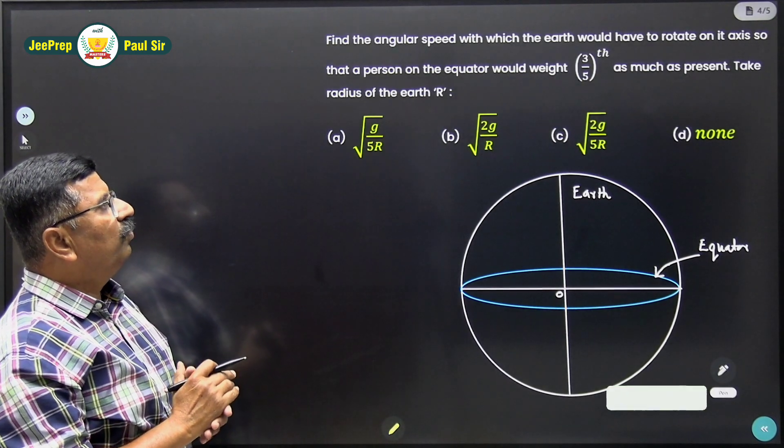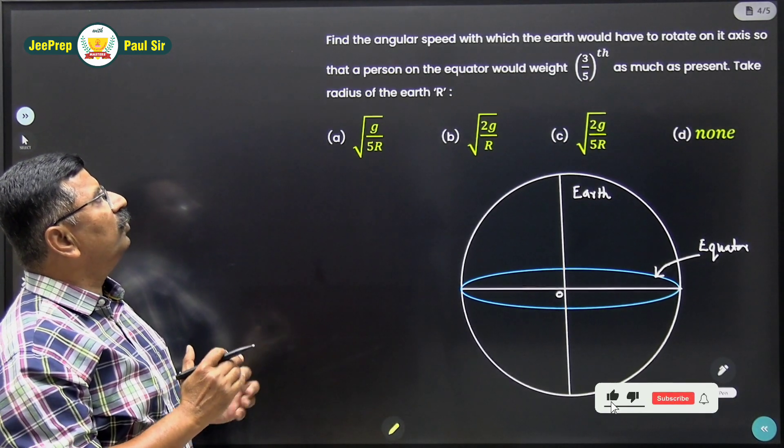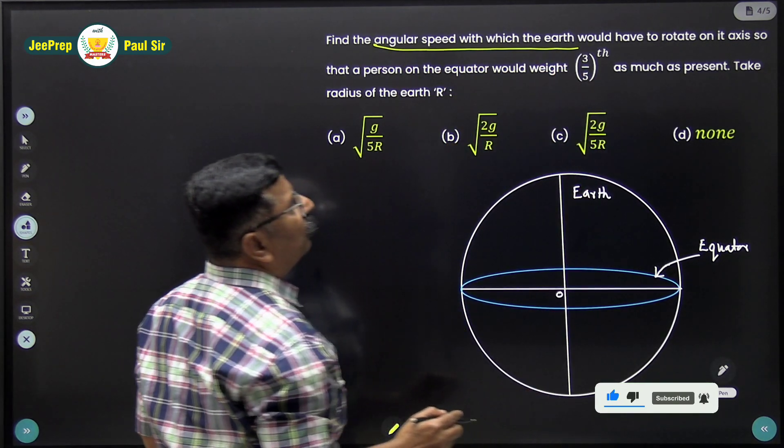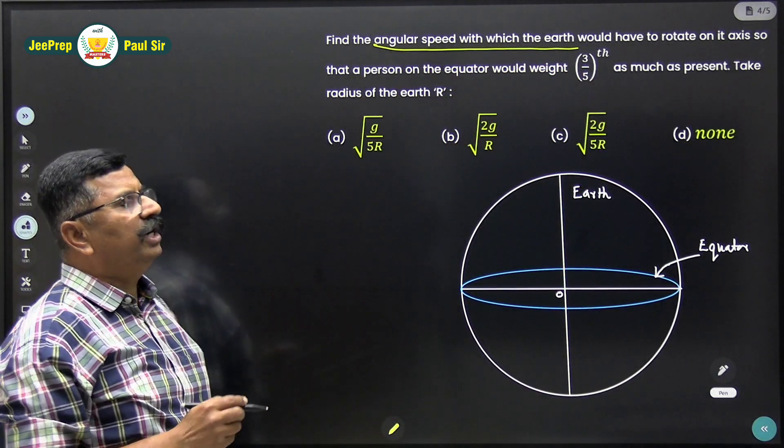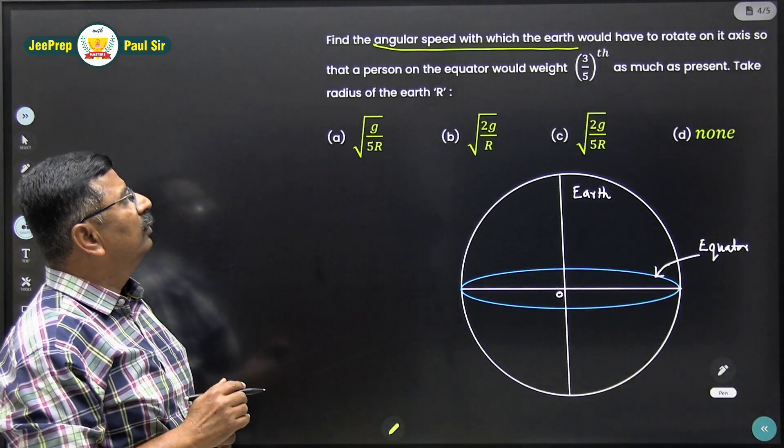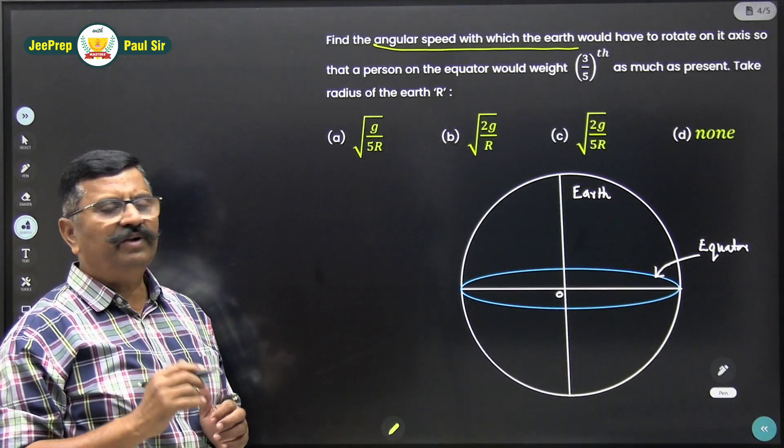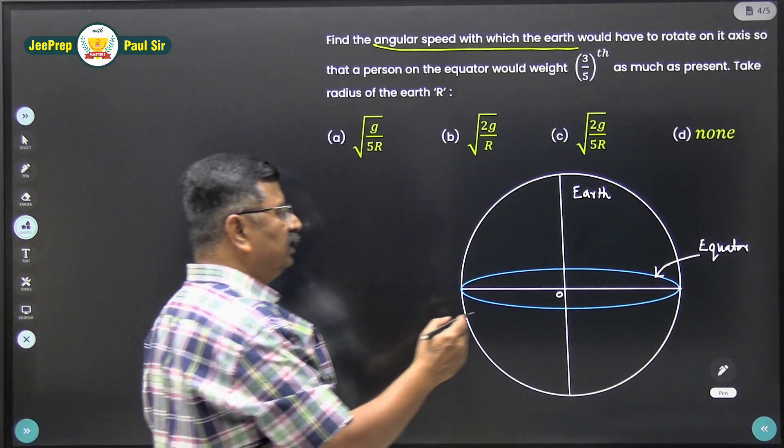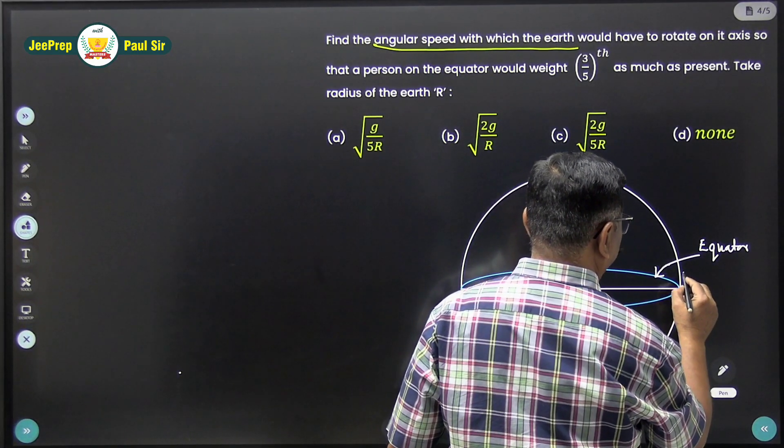So in this problem, what we want to find out is the angular speed with which the earth would have to rotate on its axis so that the person on the equator would weigh 3/5 times as much as the present. Let the person is standing on the equator, the person is standing here.